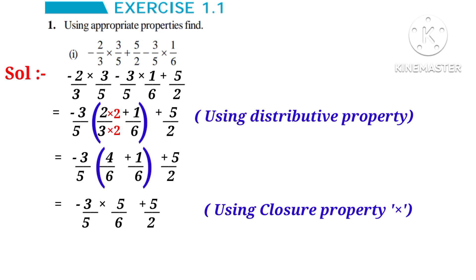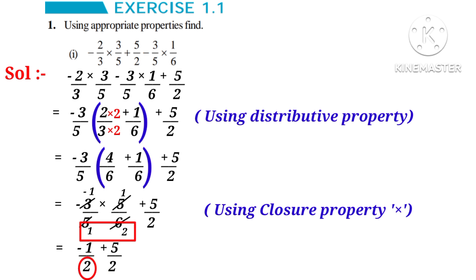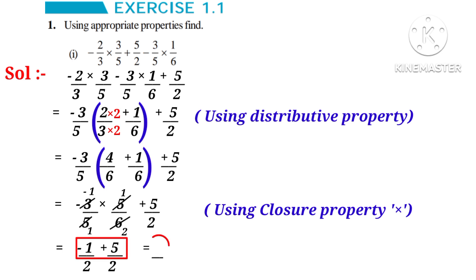Now, using closure property, we can easily multiply and simplify. On simplification, minus 3 by 5 into 5 by 6 gives minus 1 by 2. Adding minus 1 by 2 plus 5 by 2 gives 4 by 2. On simplification by 2, that is equal to 2, which is the answer.